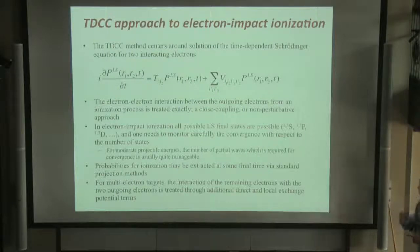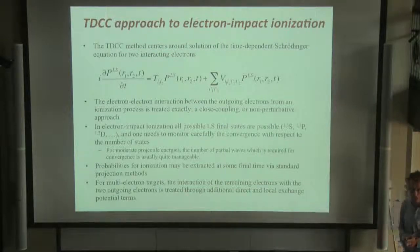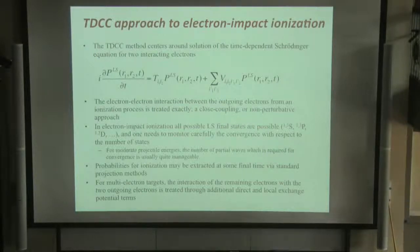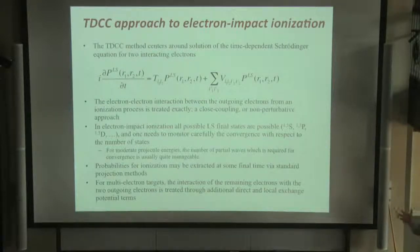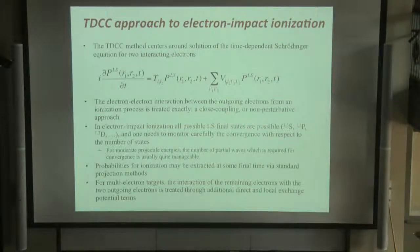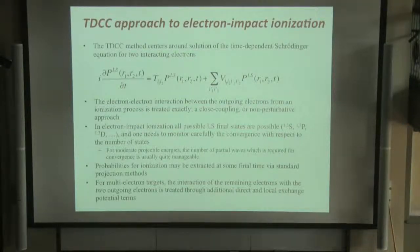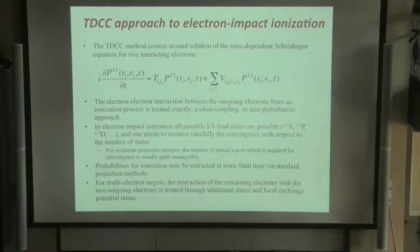For those who aren't familiar with it, the time-dependent close coupling approach centres around the solution of the time-dependent Schrödinger equation by straight numerical computation, and in this guise it's for two interacting electrons. One takes the total wave function for two electrons, expands it over some spherical harmonic basis, and then straightforwardly propagates the radial wave function — the PLS function — on a numerical grid using finite difference or finite element methods, until convergence is reached with respect to all the partial waves that need to be included.